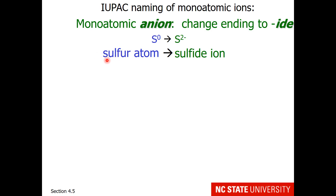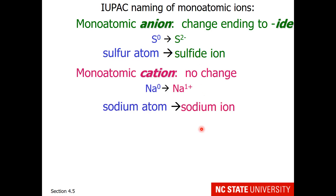For example, the neutral sulfur atom, when it gains two electrons, becomes the sulfide ion — the '-ur' suffix has been lost and an '-ide' ending is added. Monoatomic cations have no change. The sodium atom, which is neutral, when it loses an electron becomes sodium 1+, the sodium ion.